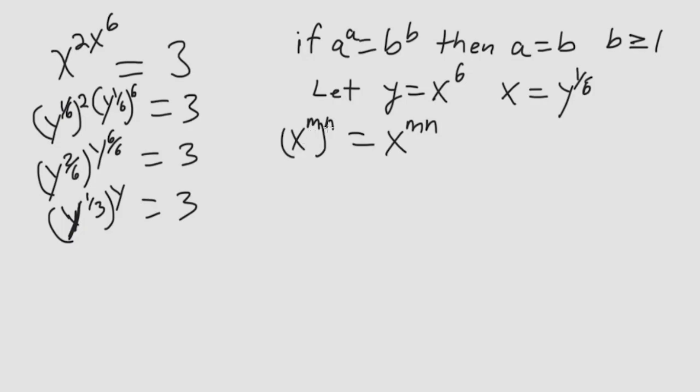So x to the m to the n equals x to the mn. This multiplies across, but this is also equal to x to the n times m. These interchange, the n and the m interchange. So I'm going to interchange the y and the 1 third. So this here, y to the y to the 1 third equals 3.